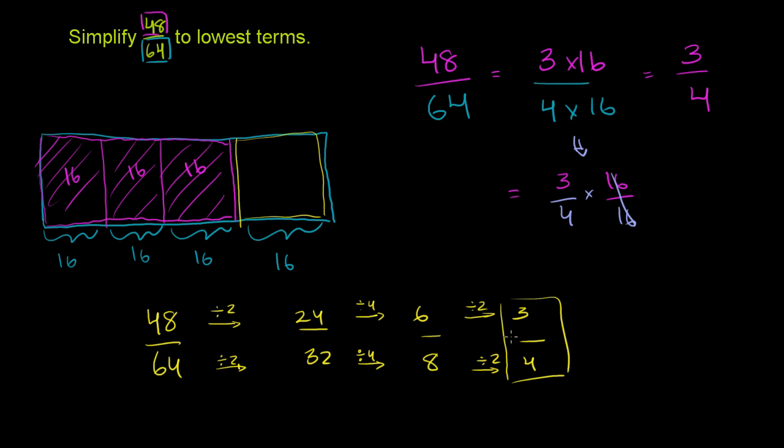So however you want to do it, the easiest way, or the fastest way is to say, hey, 16 is the biggest number that goes into both of these. Divide both by 16. You get 3 fourths.